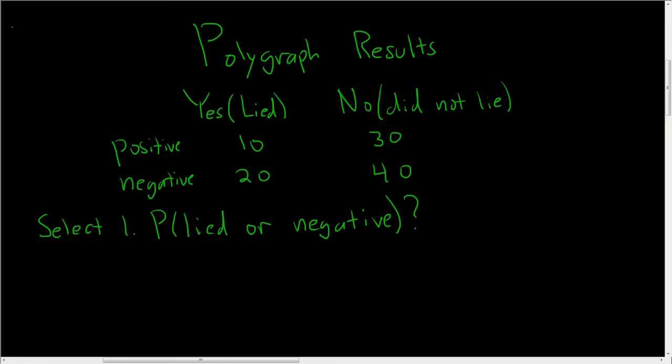All right, so we have a table, and it's a polygraph result. So a polygraph is a lie detector. And so how do you read this table?